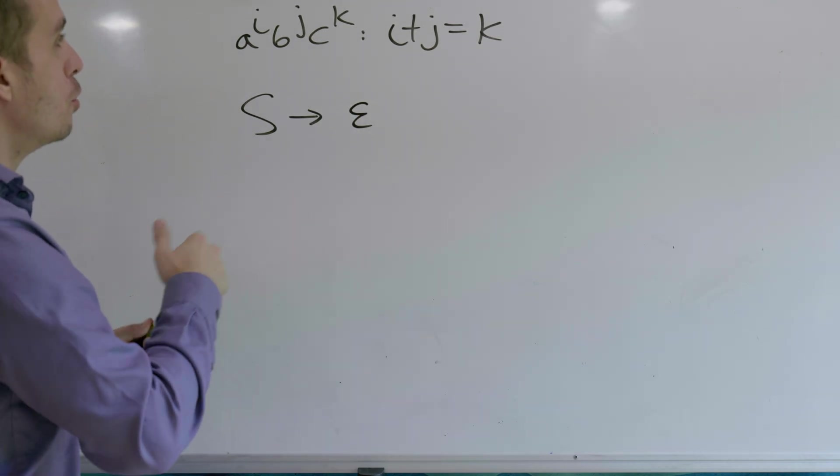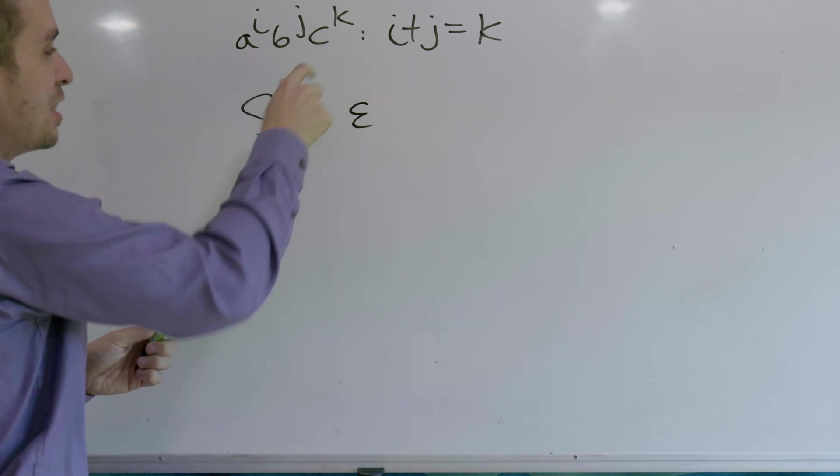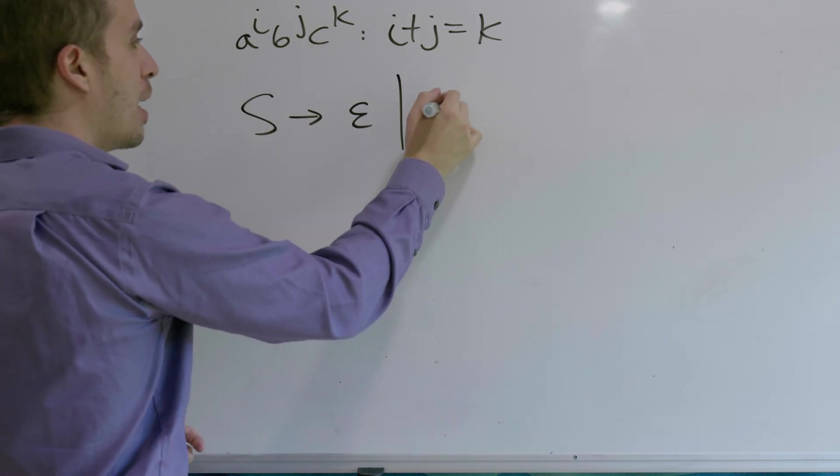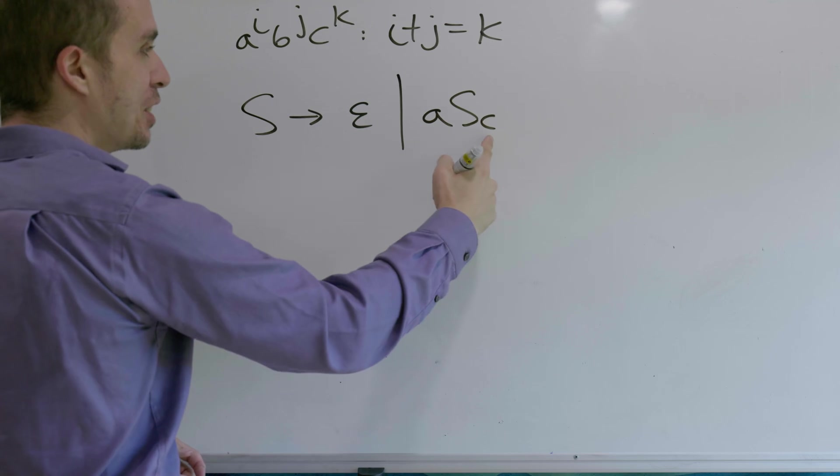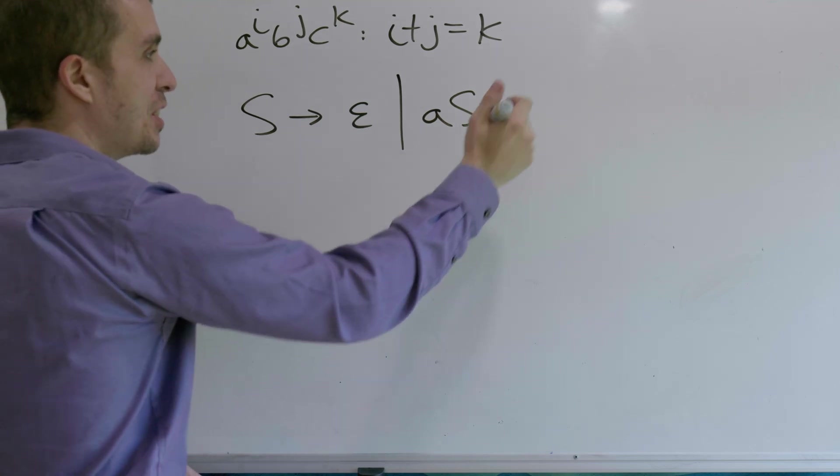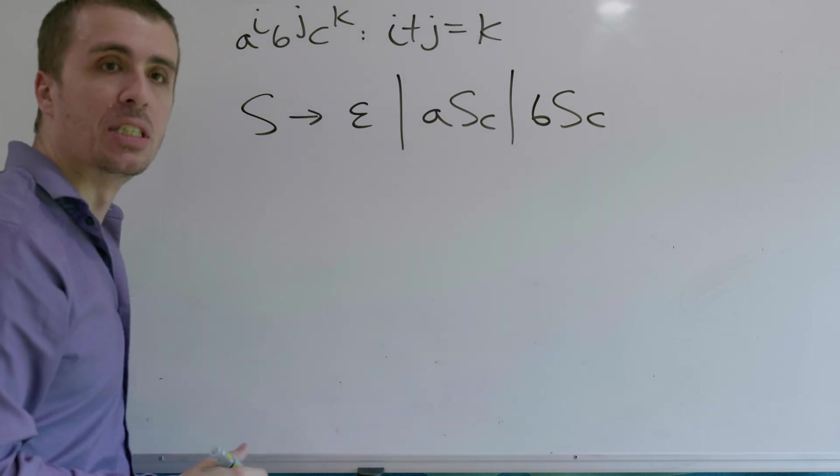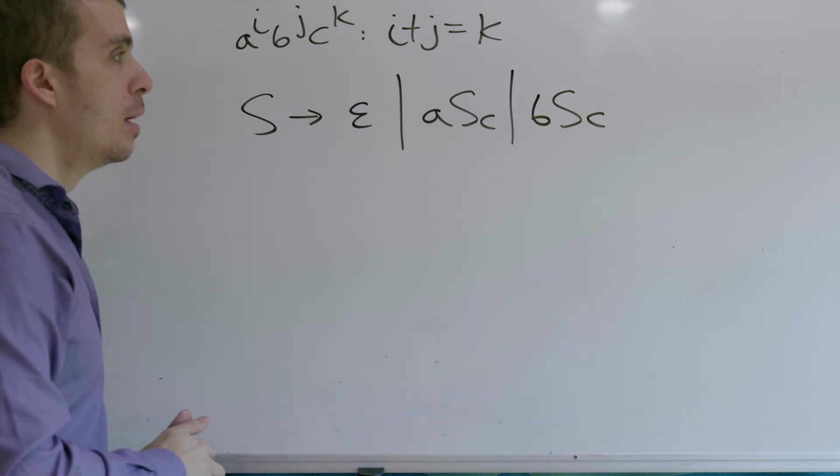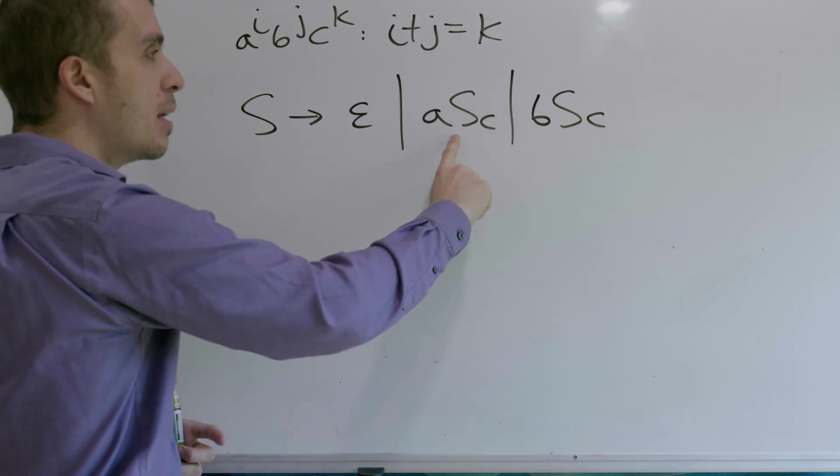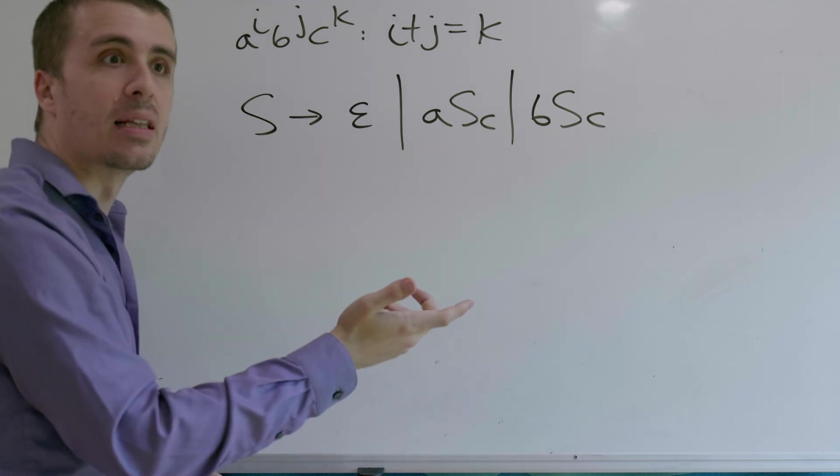Well, let's think, if we are going to generate some a's and then c's, one thing that we might try is something like this: a, s, c, every a matches with every c, and then do the same thing with the b's. Every b that's made matches up with a c. And this seems reasonable until you notice the fact that we can apply these rules independently of each other.